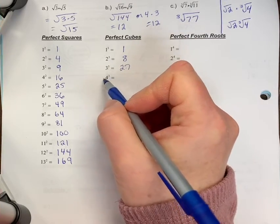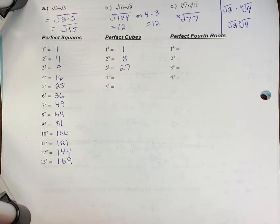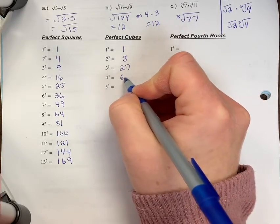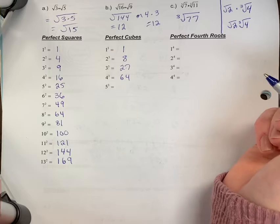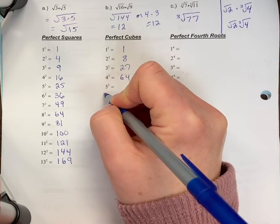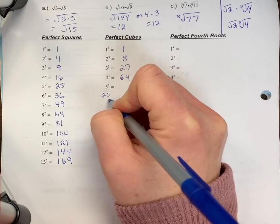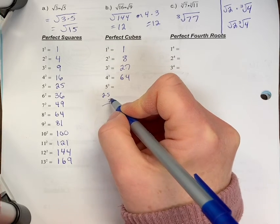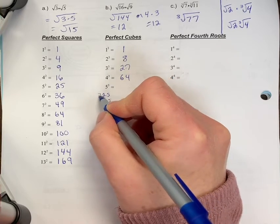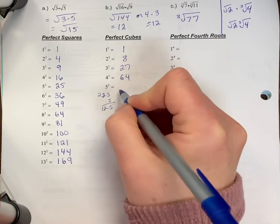You'd have to know four cubed. Four times four is 16, 16 times three, you would need to know. So 64. And then five cubed, five squared is 25, 25 times five. If you have to show a little bit of work to do these without a calculator right away, that's fine. Five times five is 25. Two times five is 10 plus the two is 125.